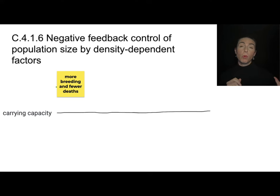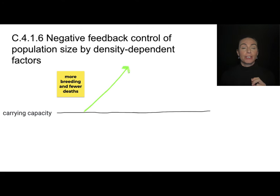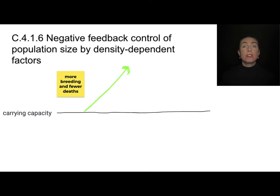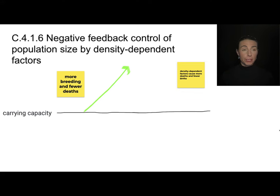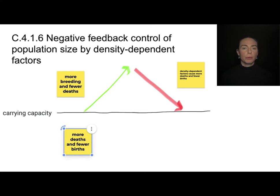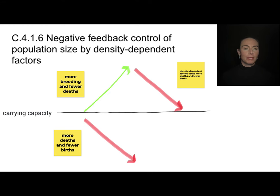Over time, more births and fewer deaths will cause an increase in population. If the population is well above its carrying capacity, density-dependent factors play a huge role, causing more deaths and fewer births and bringing the population back down toward carrying capacity. Conversely, if there are more deaths and fewer births, the population decreases, and once it dips well below carrying capacity, those density-dependent factors become less important, allowing the population to rise again.